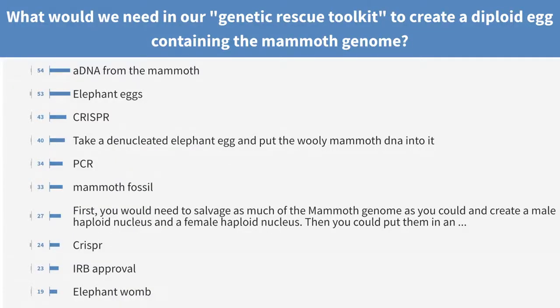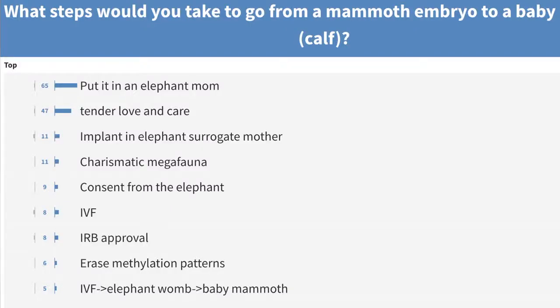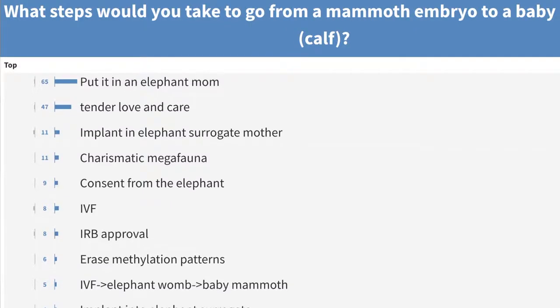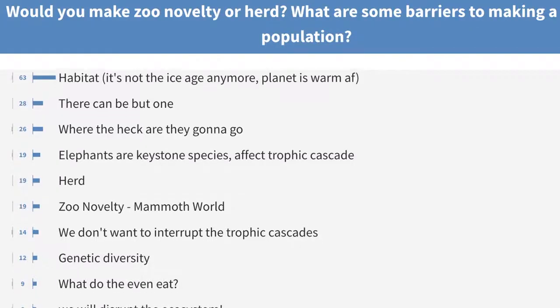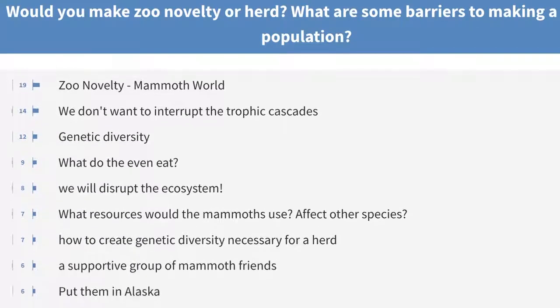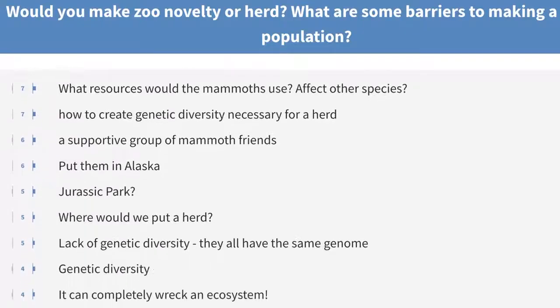They had learned a lot of genetics and some reproductive technology, so we had the students talk amongst themselves and then post their answers for everybody to see, and then the other students could vote them up. We took them through what would be difficult about using those techniques, which ones would actually work best, and some of the things that would be challenging ecologically or from a population genetic standpoint.